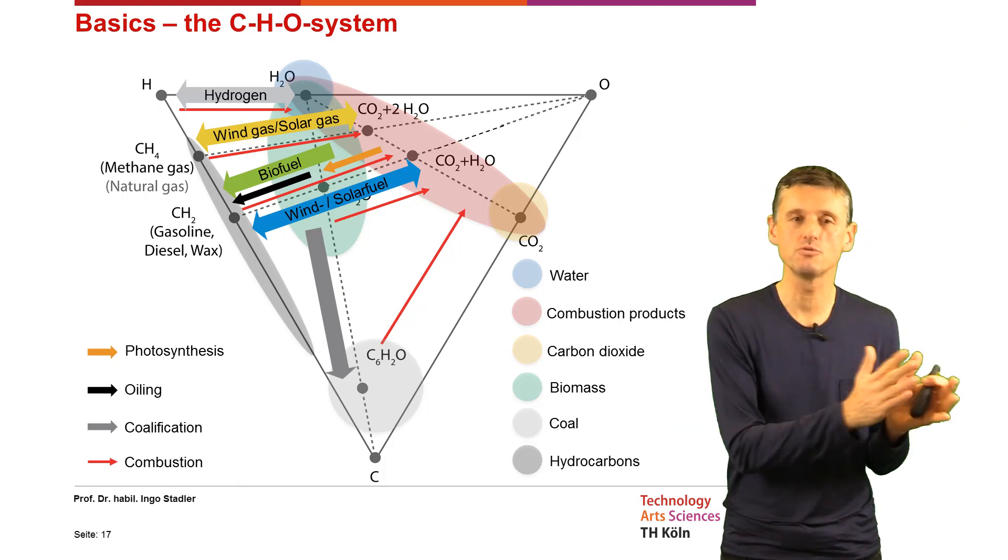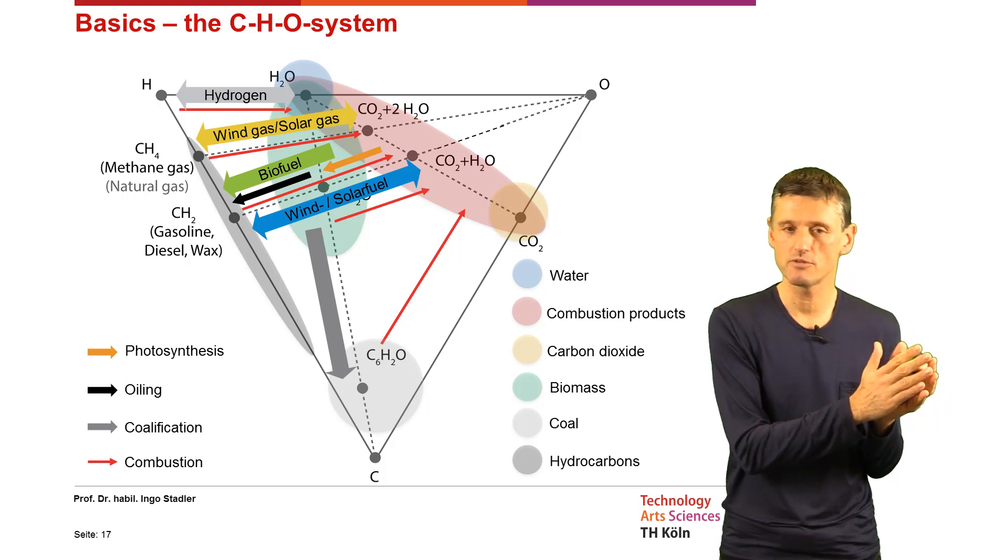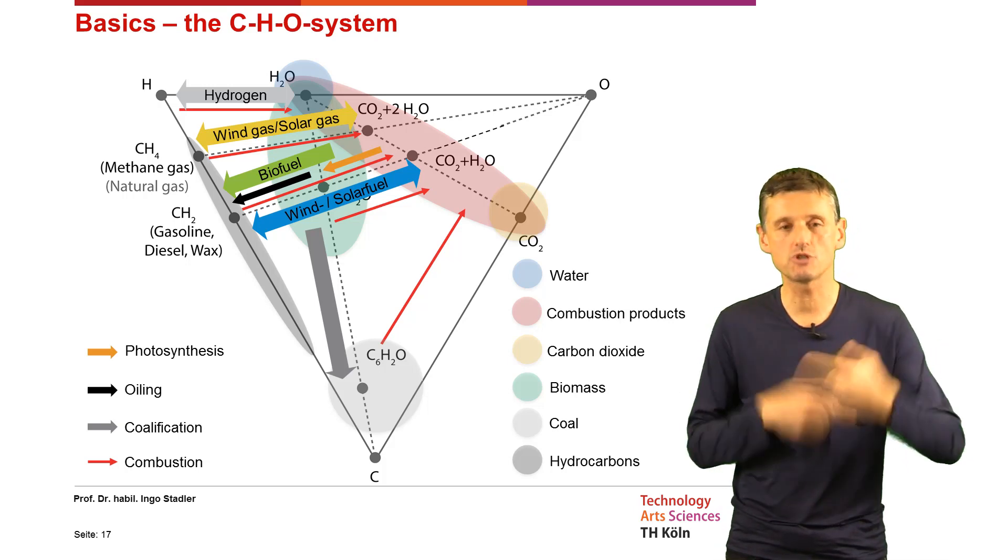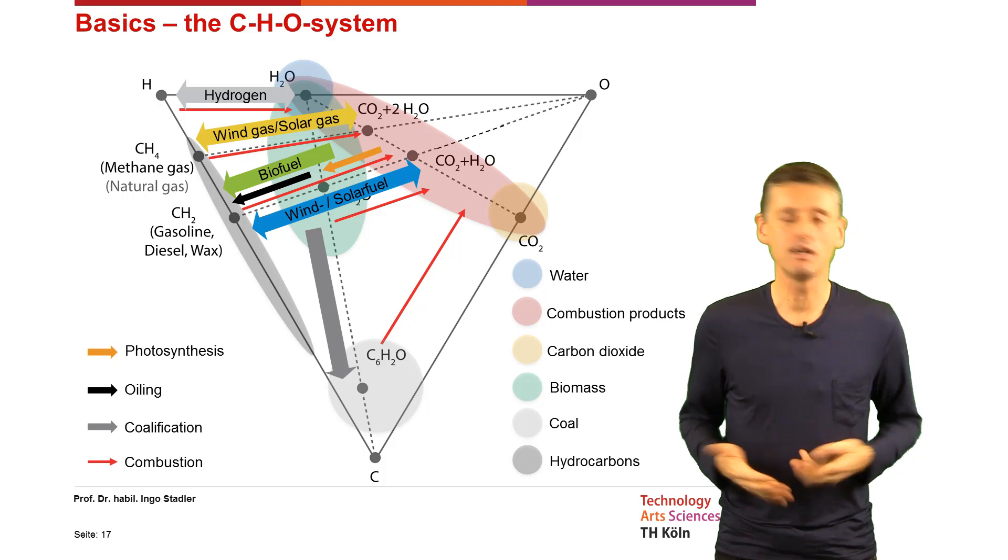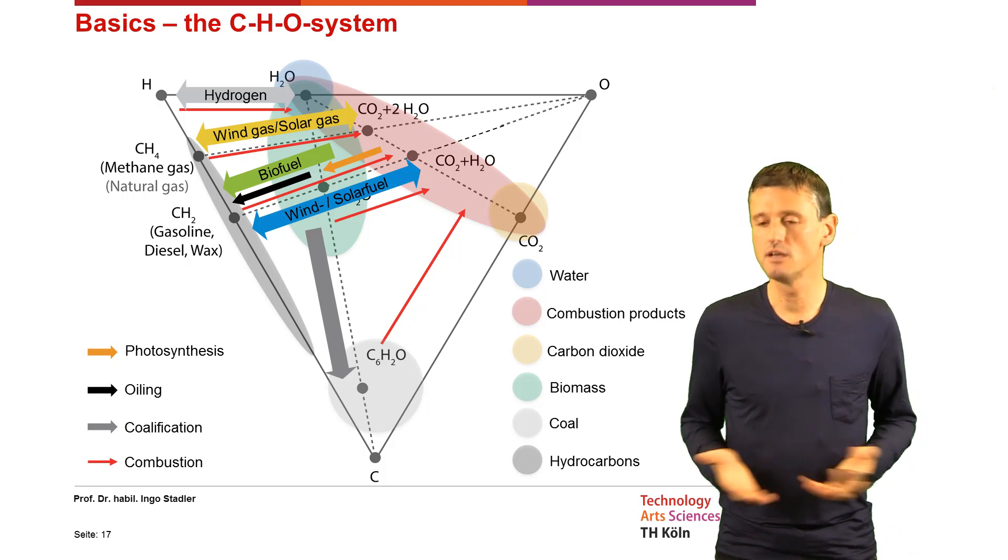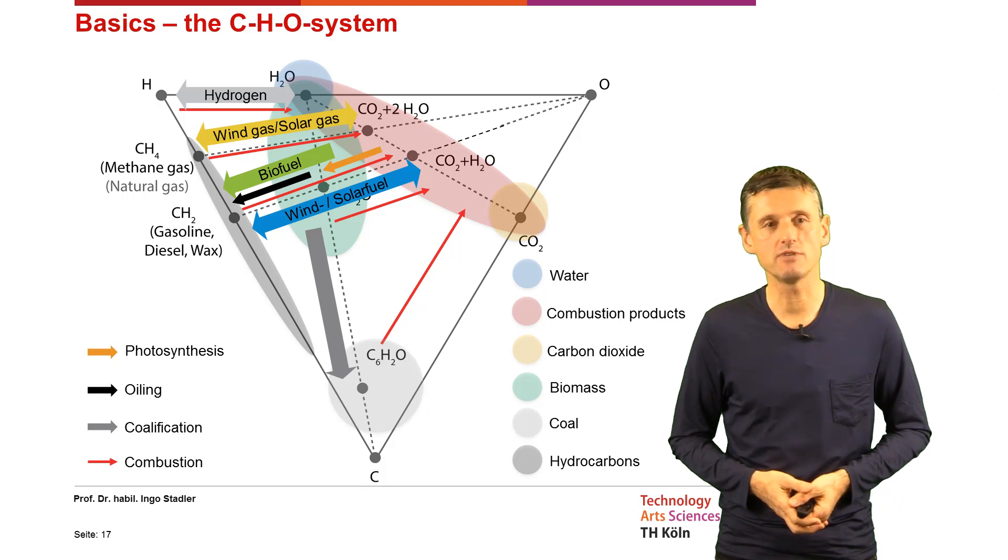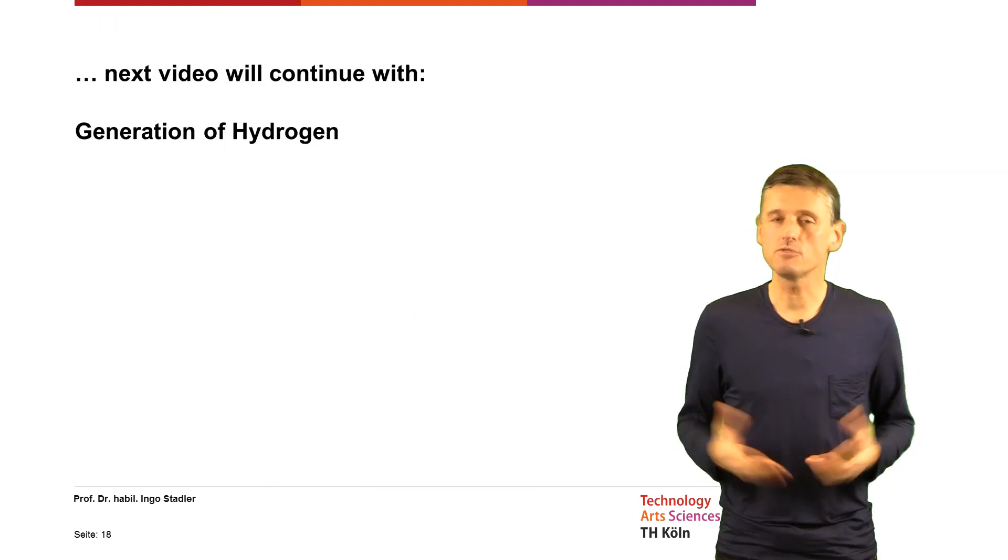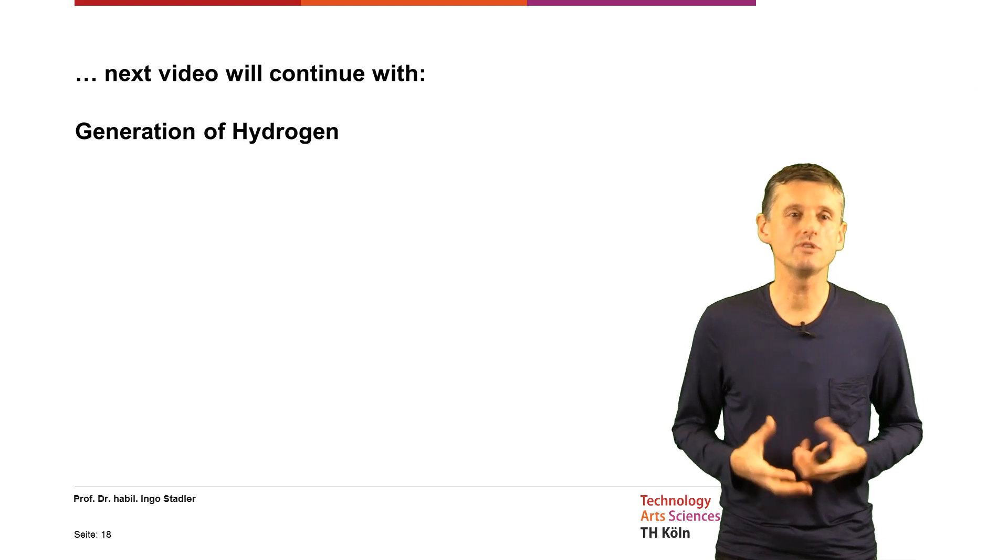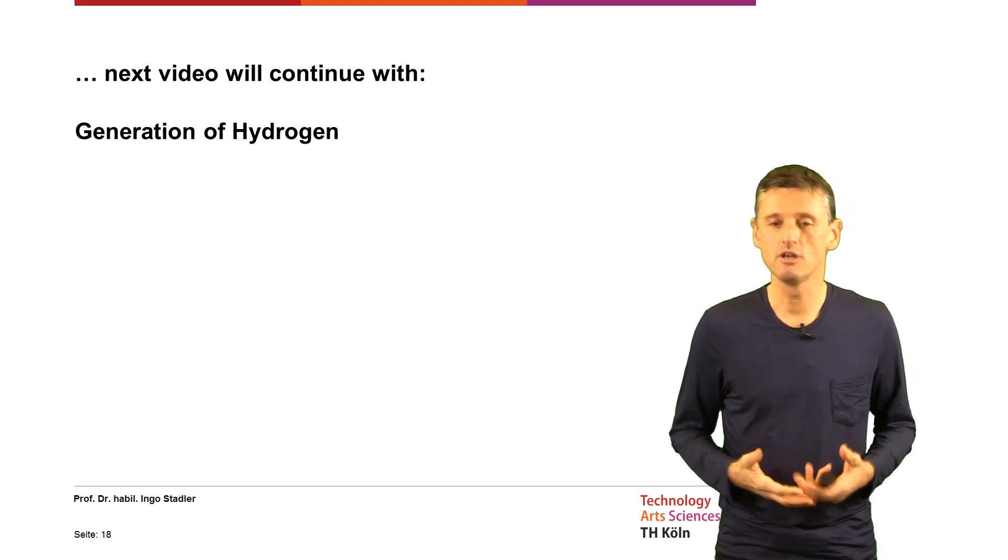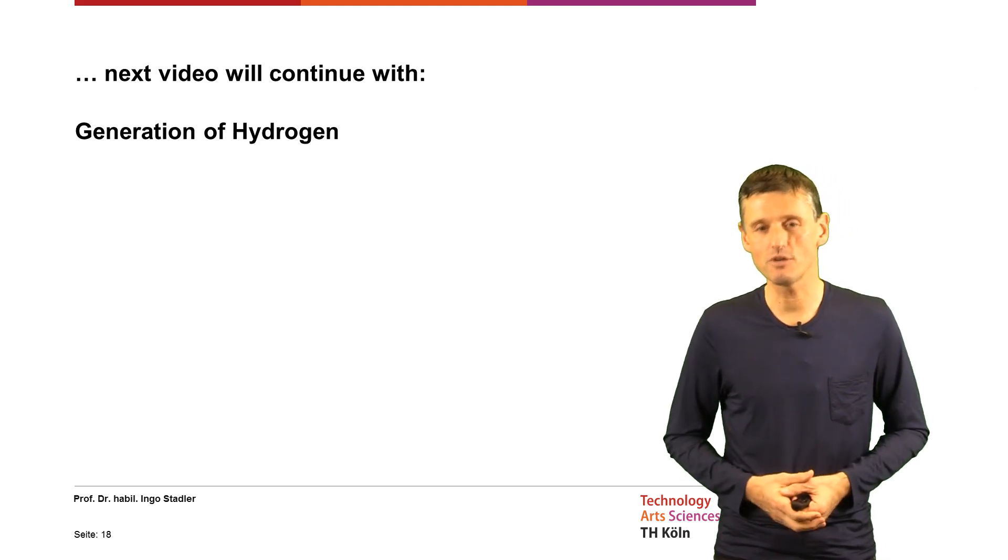When we once have produced those chemical energy carriers, we can discharge them in the same way like we are doing that nowadays with the fossil energy carriers. And that was the short introduction. In the next video, we will then show the generation of hydrogen. Thank you very much.